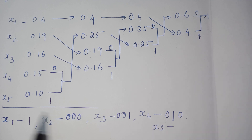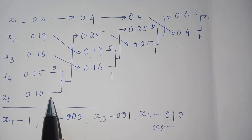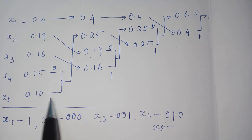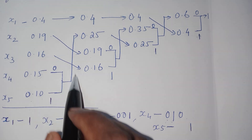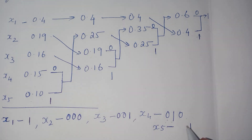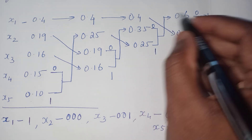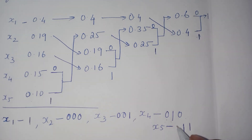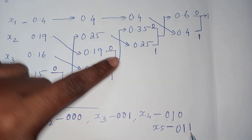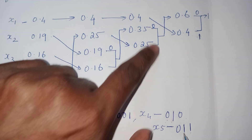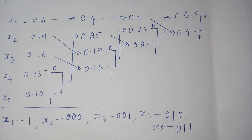For x5 with probability 0.10, track it through the tree: the first branch is 1, then 1, then 0. So the code for x5 is 011. This is how you find the code word using Huffman coding.